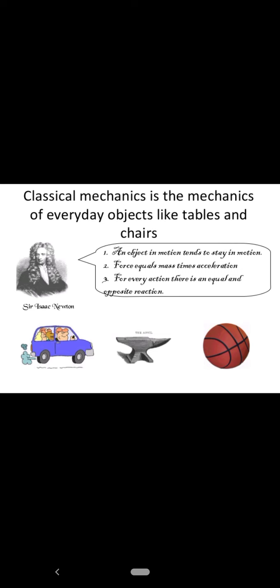Classical mechanics is the mechanics of everyday objects like tables and chairs. The origin of classical mechanics was laid by Newton. He gave three basic laws: first law is an object in motion tends to stay in motion, force equals mass times acceleration was the second law, and the third law was for every action there is an equal and opposite reaction. These three basic laws led to the foundation of classical mechanics.